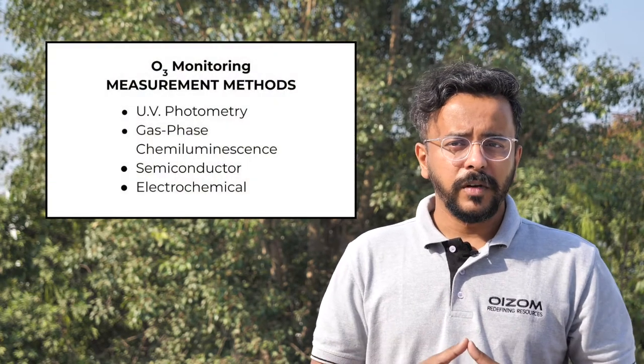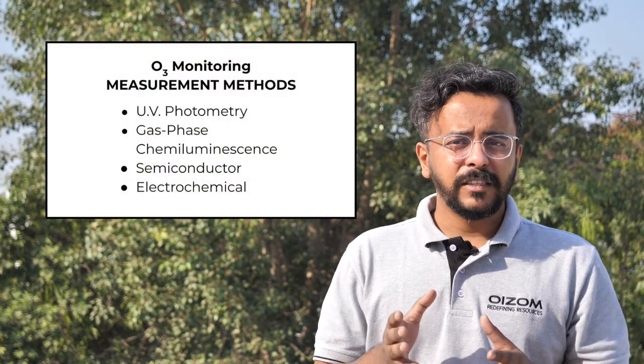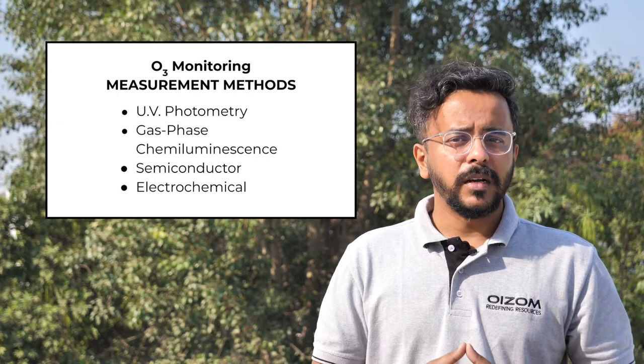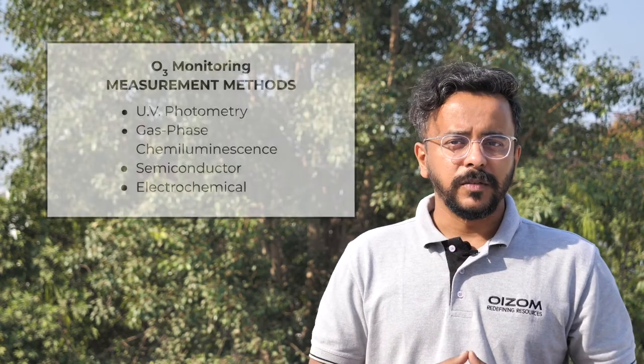OZON monitoring is an efficient way to detect the accumulation of high levels of ground level OZON that we are exposed to, and alerts when a certain level is exceeded. Different working principles for OZON monitoring in the ambient environment are UV photometry, gas-phase chemiluminescence, semiconductor, and electrochemistry.